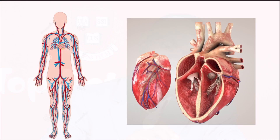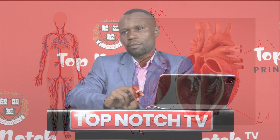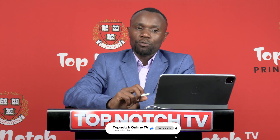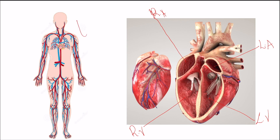Our heart, which is our focus for today, has four distinct chambers: we have the atria — two of them, the left atrium and the right atrium — and the ventricles, two of them, the right ventricle and the left ventricle. Blood flows into the heart twice before it goes to the general body circulation, and that is why we say we have double circulation.